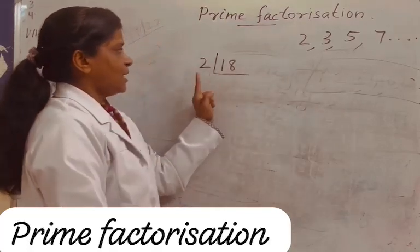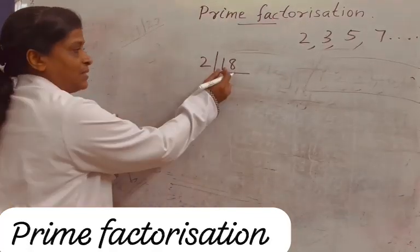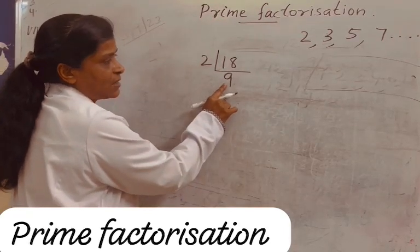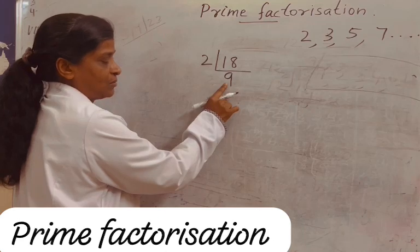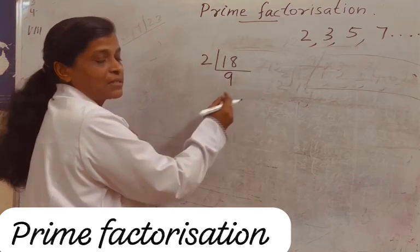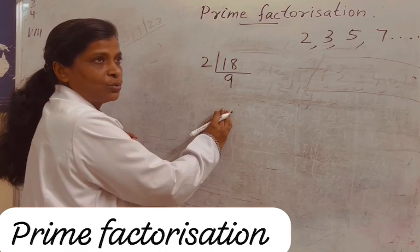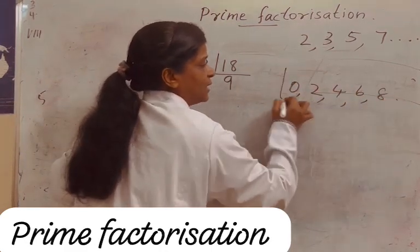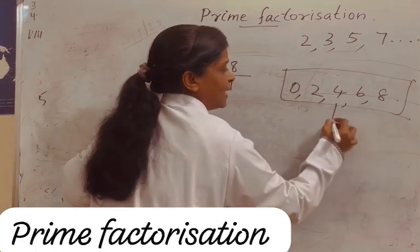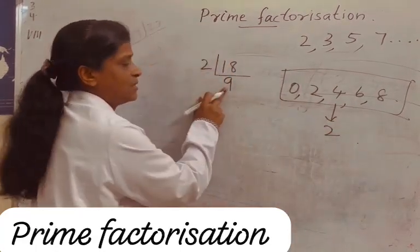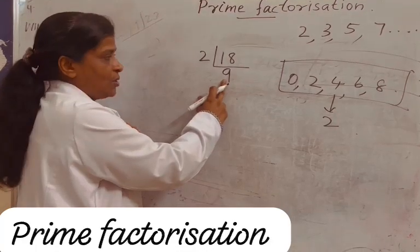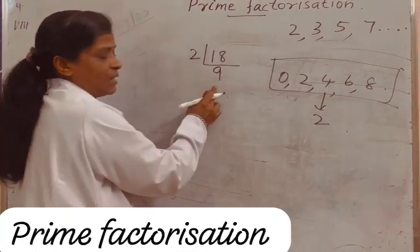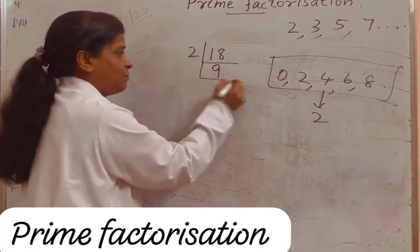18 divided by 2: how many 2s are 18? 18 divided by 2 is 9. Again, is 9 divisible by 2? No. Divisibility test of 2: if the last digit is 0, 2, 4, 6, or 8, the number is divisible by 2. Here it is 9, so it is not divisible by 2. So take the next prime number, 3. 9 is divisible by 3, so divide by 3.